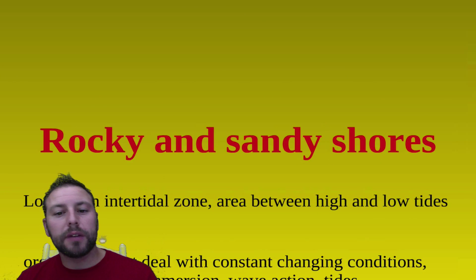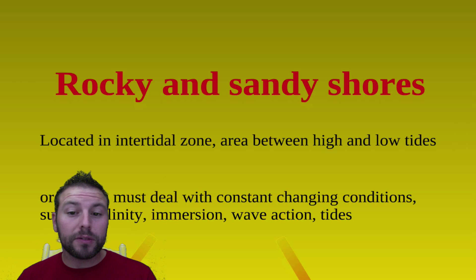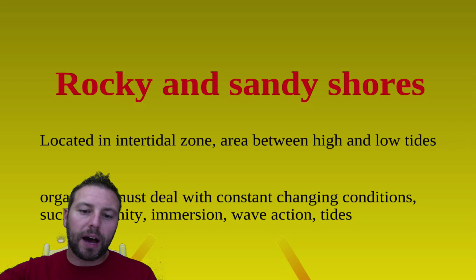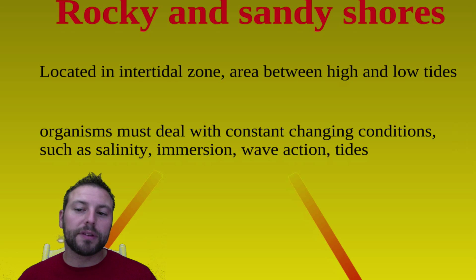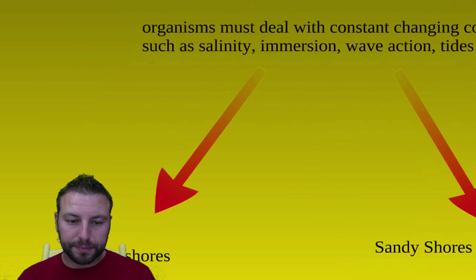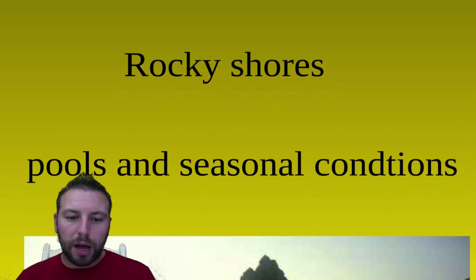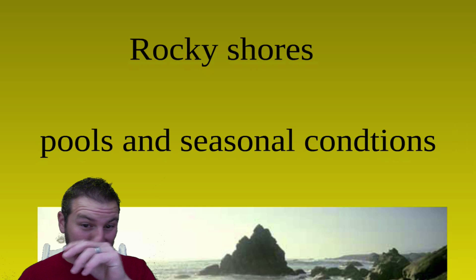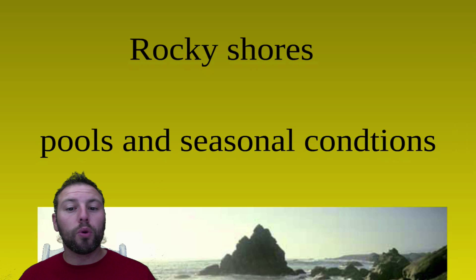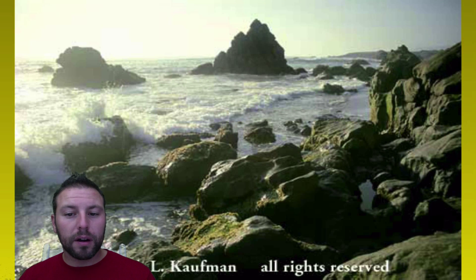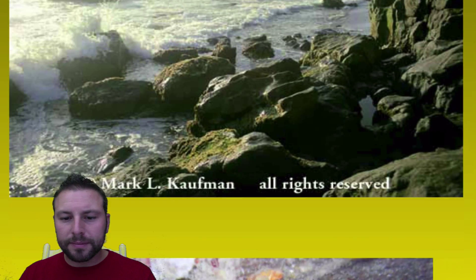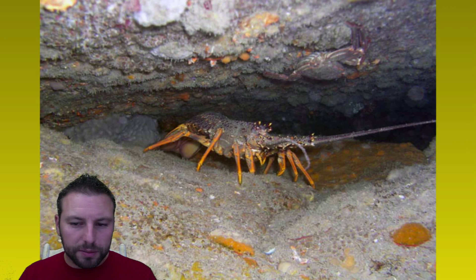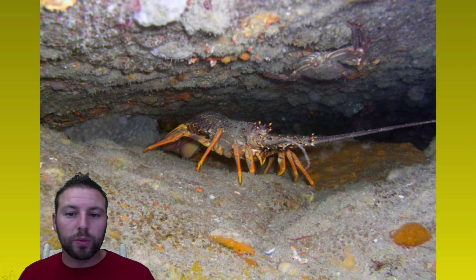Then we have our rocky and sandy shores. These areas are intertidal zones — the area where we have high to low tides. Just like in estuaries, mangroves, and seagrass beds, organisms have to deal with a variety of different conditions. Our rocky shores are going to be a little bit more complex, with seasonal and pooling conditions in these areas. This is pretty much what we'll see up in Maine and similar regions, with lobsters and other organisms hanging out within these tidal pools.